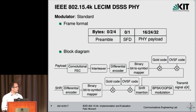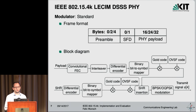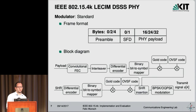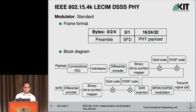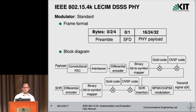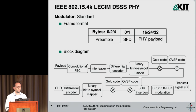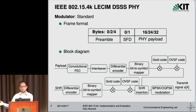Now let's get into the PHY layer itself. It's designed for low-complexity devices, so it's rather simple. The frame format consists of a synchronization header — a preamble and a start-of-frame delimiter — and the PHY payload. The PHY payload is encoded with a rate-1/2 convolutional encoder, then there's an interleaver, a differential encoder, and the bits are mapped to 1 and minus 1 before spreading with the primary spreading code, which is a gold code with said high spreading factors. There's also the possibility for an optional OVSF code multiplication, which provides higher robustness against inter-cell interference. The synchronization header is encoded in a very similar way, just without the convolutional FEC and interleaver. The chips are BPSK or OQPSK modulated.